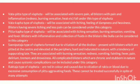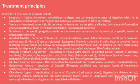In Rakta type of Vispota, the color of the blisters is red, caused by vitiation of rakta or blood due to excessive consumption of pitta-aggravating foods. Since pitta and rakta have an ashraya-ashrayi sambandha, pitta-kara ahara and vihara will aggravate the rakta, leading to rakta type of Vispota. These cannot be treated successfully in spite of many attempts.